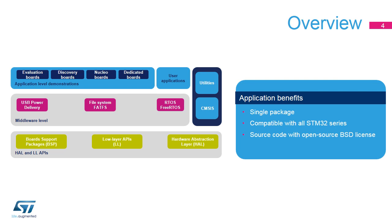The STM32CubeG4 MCU package also contains a set of middleware components with corresponding examples: a full USB device stack supporting many classes, a USB power delivery stack, CMSIS-RTOS implementation with FreeRTOS open-source solution, and a FAT file system based on the open-source FatFS solution. Several applications and demonstrations implementing all these middleware components are also provided.